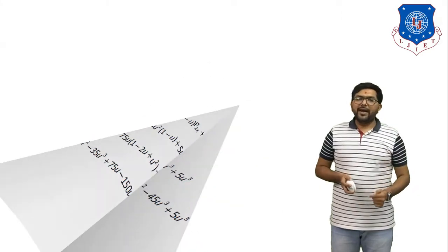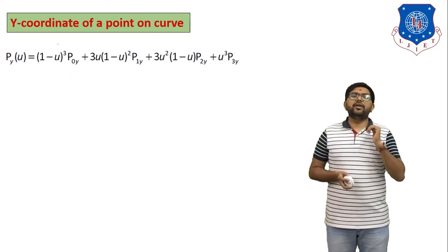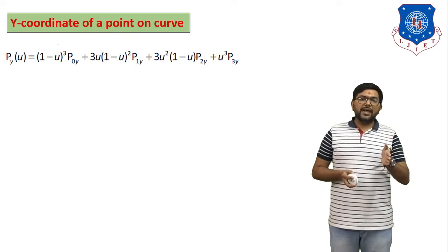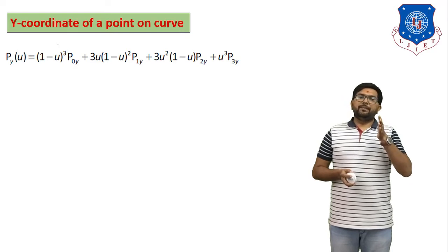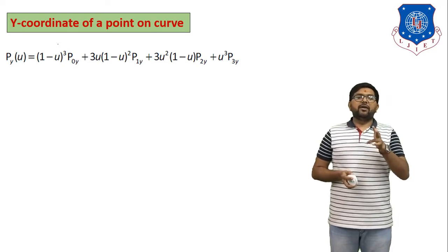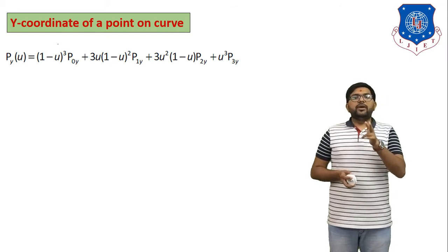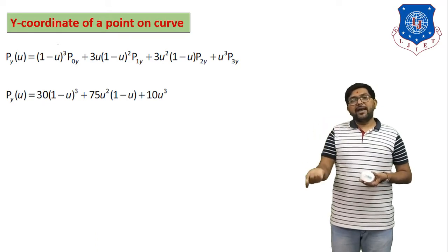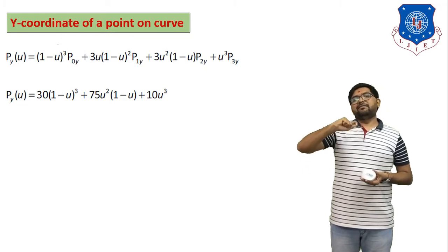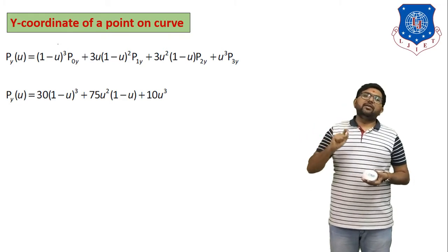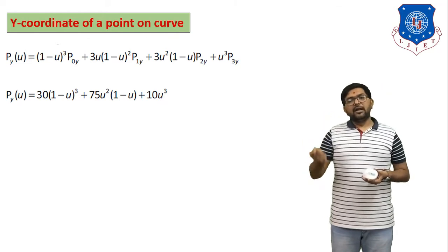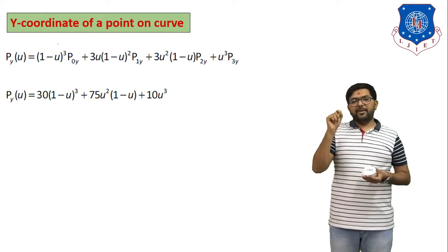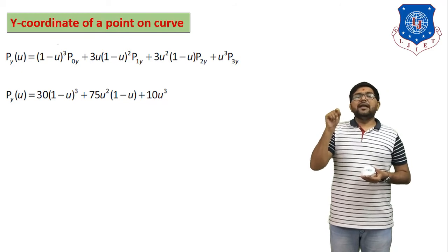Now we find the equation for the y-coordinate. P(u)y = (1−u)³·P0y + 3u(1−u)²·P1y + 3u²(1−u)·P2y + u³·P3y. Here P0y, P1y, P2y, P3y are the y-coordinates of each control point. Substituting: 30(1−u)³ + 75u²(1−u) + 10u³.